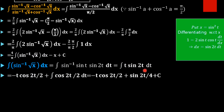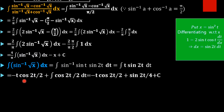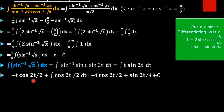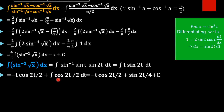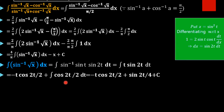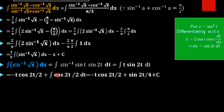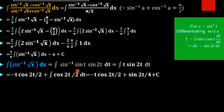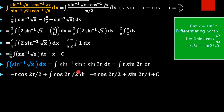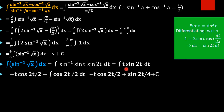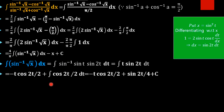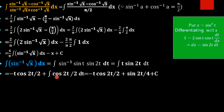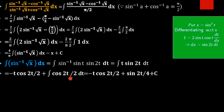Taking u equals t and dv equals sin 2t dt, we apply integration by parts: t times the integral of sin 2t, which is minus cos 2t by 2, minus the integral of derivative of t, that is 1, times minus cos 2t by 2 dt. The two negatives become a plus, giving minus t cos 2t by 2 plus the integral of cos 2t by 2 dt.